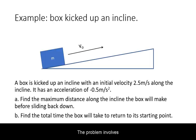The problem involves a box with an initial velocity sliding up a ramp, slowing down, and then sliding back down.